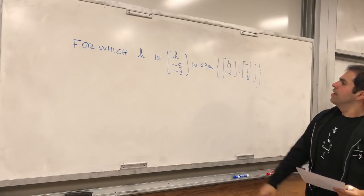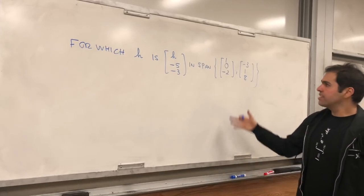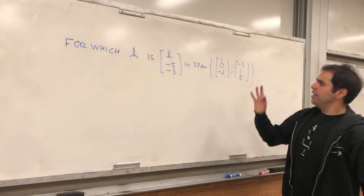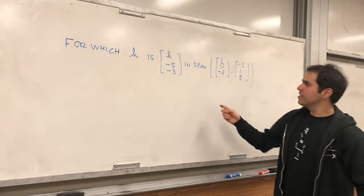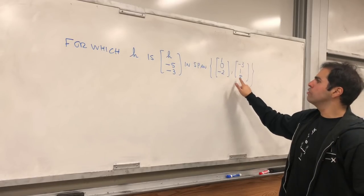Now, what is the span? Intuitively, it's the information that's contained in those vectors. Information here means in terms of linear combinations. So the span is just a set of linear combinations of those two vectors.